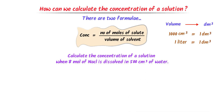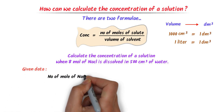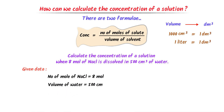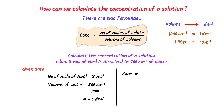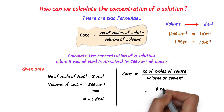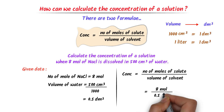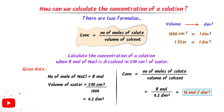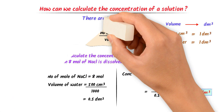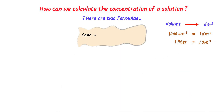Consider this numerical problem: calculate the concentration of a solution when 8 moles of sodium chloride is dissolved in 500 cm³ of water. Given: moles of NaCl = 8 mol; volume = 500 cm³. Since 1 dm³ = 1000 cm³, we divide 500 by 1000 to get 0.5 dm³. Using the formula — concentration = moles ÷ volume = 8 ÷ 0.5 — we get 16 mol/dm³. So the concentration of the solution is 16 mol/dm³.